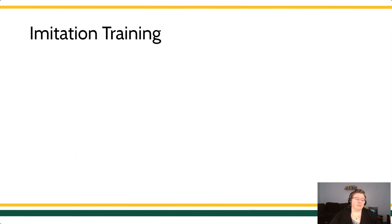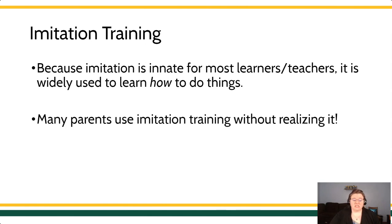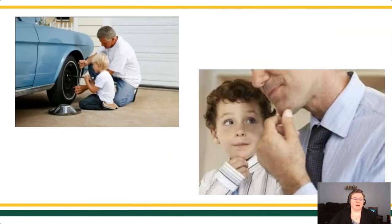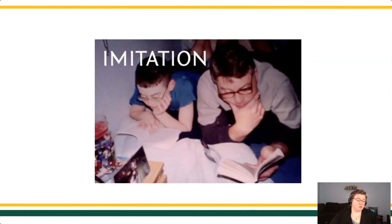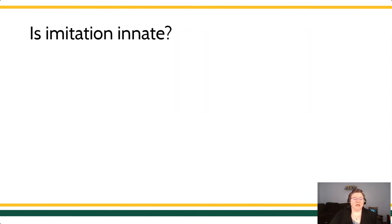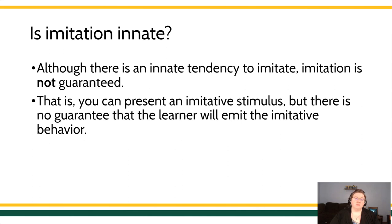When we talk about imitation training, it can be really easy to assume that imitation is innate so we can take it for granted — but be careful. Imitation is innate for many learners and teachers, and it's widely used because it's very effective. Many parents are using imitation training without even realizing it. A few examples might be when we show our kids how to do something, or when our kids naturally mimic us. We can see it with older siblings, or even across animals in different parts of the animal kingdom. You don't even have to be a conspecific — but even though there's a tendency to imitate, it's not guaranteed. You can present an imitative stimulus, but it's not a guarantee that the learner is going to emit that imitative behavior.